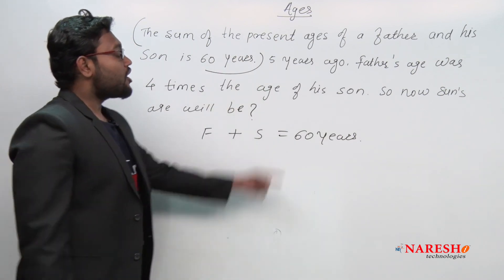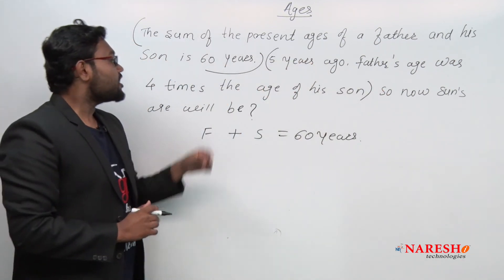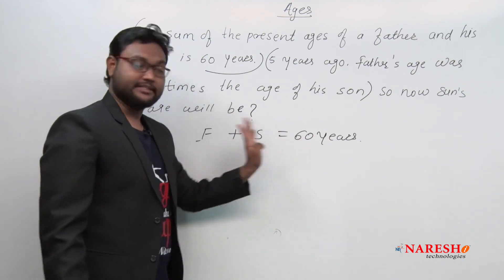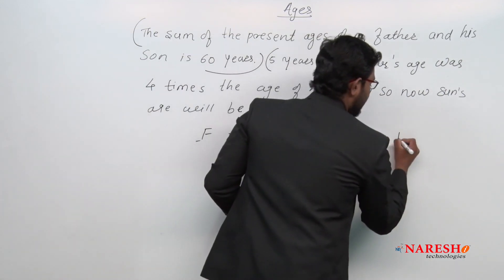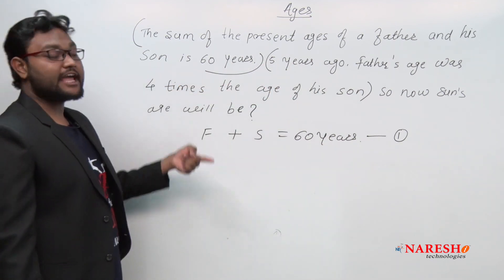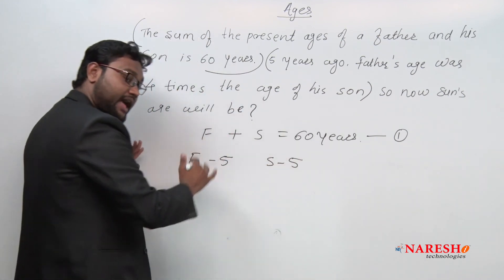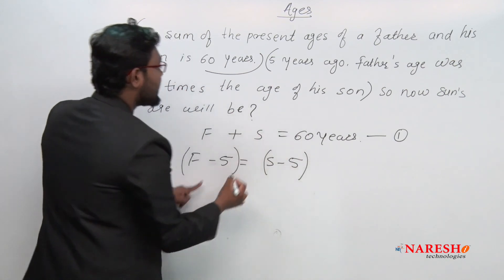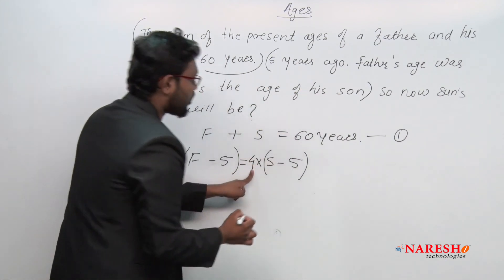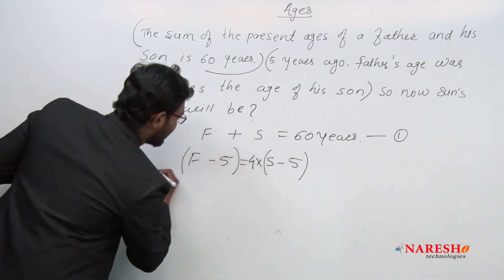Now concentrating on the second sentence: five years ago, father's age was four times the age of his son. Five years ago means we subtract five from the present age. So the equation is: F minus 5 equals four times S minus 5, which gives us F minus 5 = 4(S minus 5).